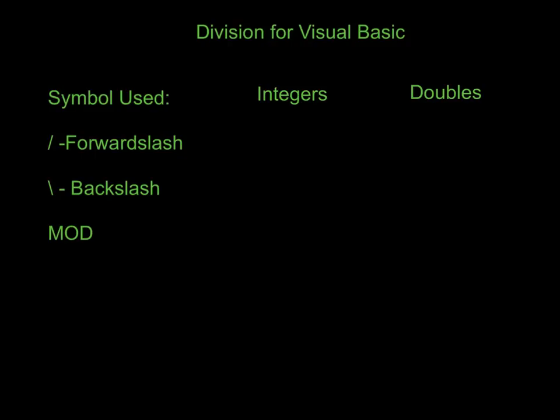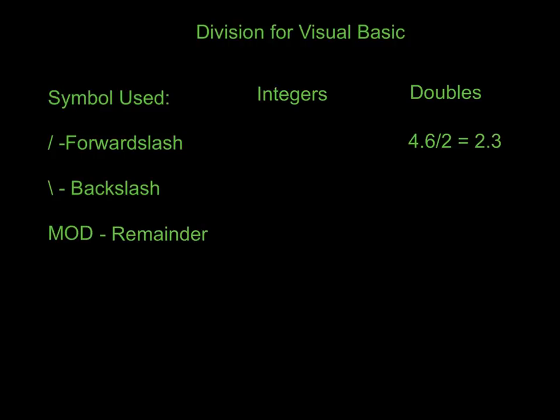And then mod actually stands for remainder — it stands for the term modular. Let's take a quick look at division working with doubles. If we take the number 4.6 and divide it by 2, that gives us the answer 2.3. You are very used to that — it is the traditional way to do that, and we don't have to worry about the remainder or rounding.